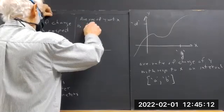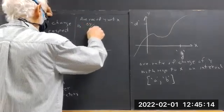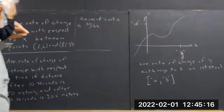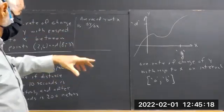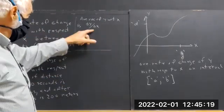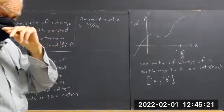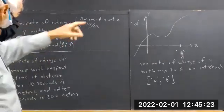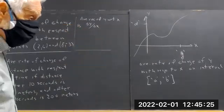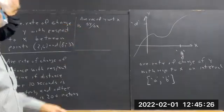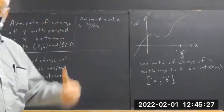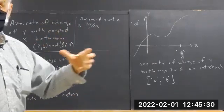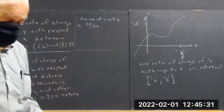What I wrote is delta Y over delta X. The delta symbol stands for 'change in.' This is the change in the value of Y divided by change in the value of X. It's not Y divided by X — it's the change in Y divided by the change in X.